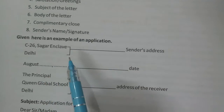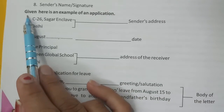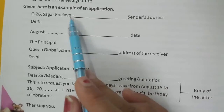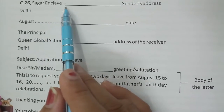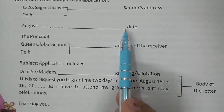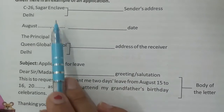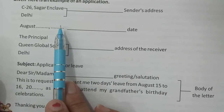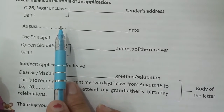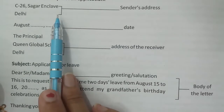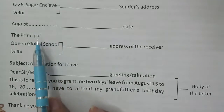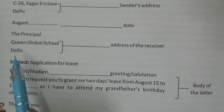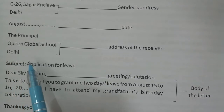Here I will take an example of an application. First of all, write down the sender's address on the left-hand side. After that, write down the date, also on the left-hand side. Then write the receiver's address — the principal, the school name, your district, city — also on the left-hand side.